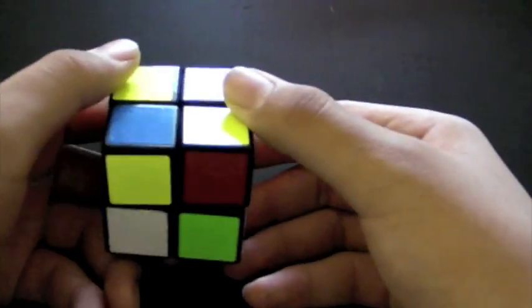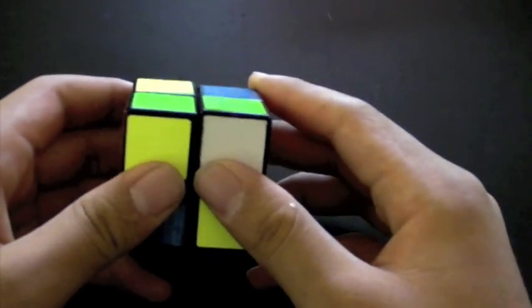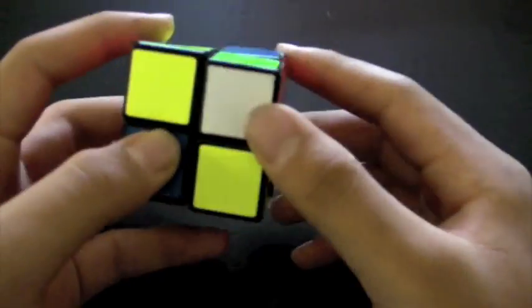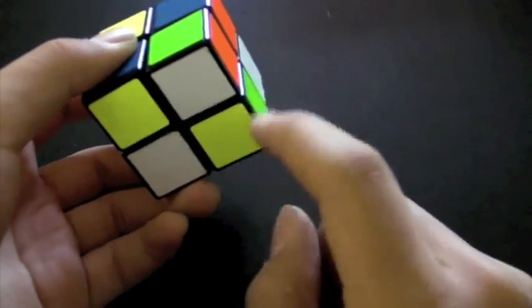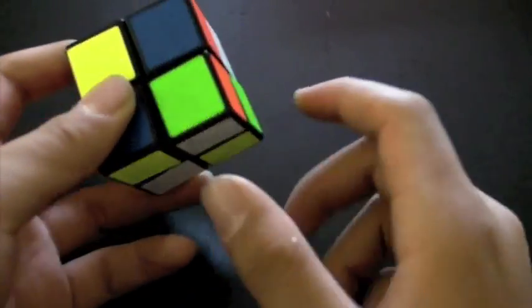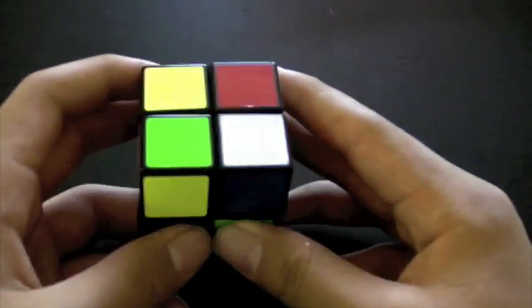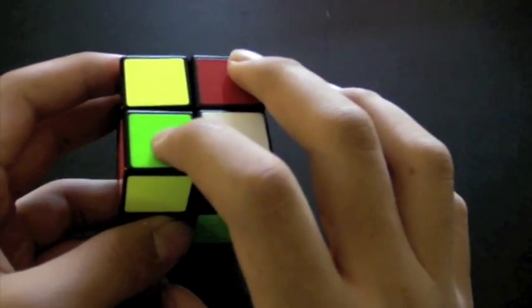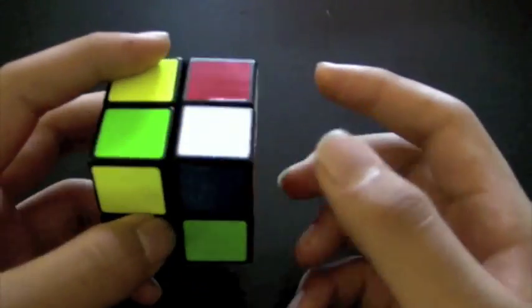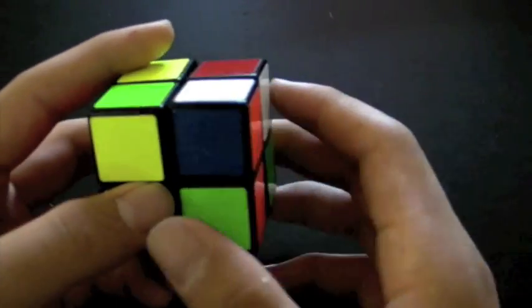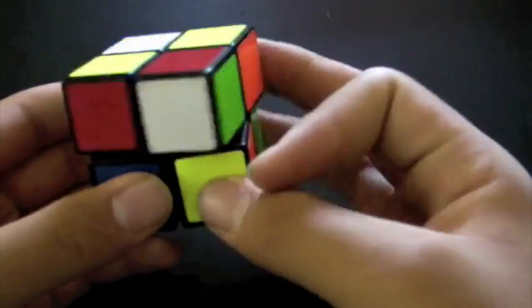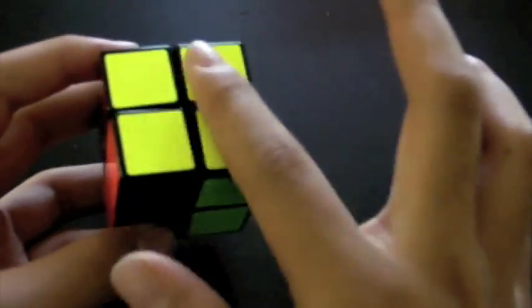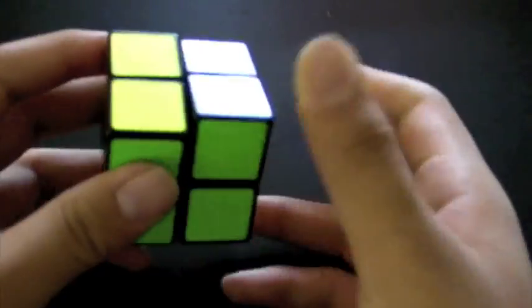The last method is called OFOTA, which stands for Opposite Face Orient All, which pretty much summarizes up the method. You first make a face of opposite colors. Then you do one of 92 algorithms that orient the top layer, as well as bring everything into its correct layer so that all you'd have to do is a PBL algorithm. This is solid. Solid. Then you do PBL.